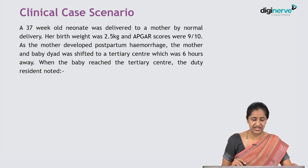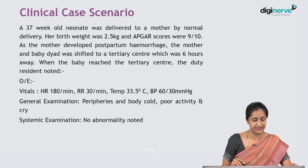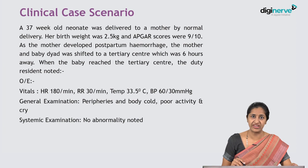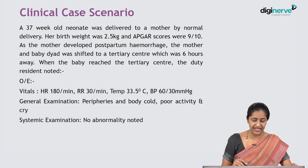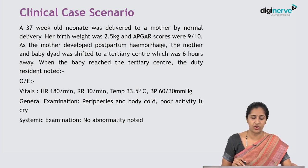When the baby reached the tertiary center, the duty resident noted the following findings. Vitals: heart rate was 180 per minute, respiratory rate 30 per minute, temperature 33.5 degrees Celsius, blood pressure 60 by 30 mmHg. On general examination, the child had cold body as well as cold peripheries, was poorly active with a poor cry. Systemic examination was normal.